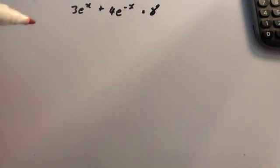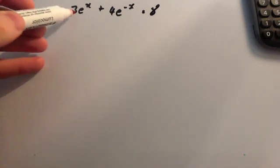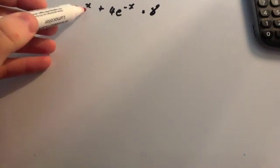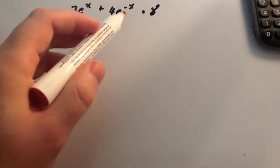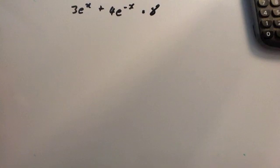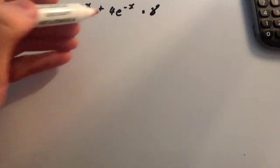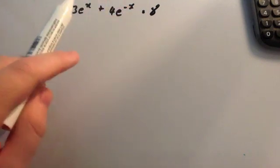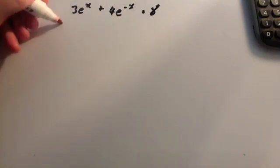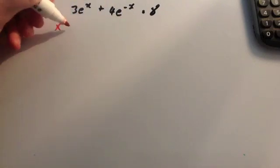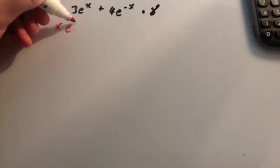The second thing I notice is there are three consecutive powers: e to the x, e to the 0x, and e to the minus x — decreasing powers of x. What would be nice is if I could get rid of this e to the minus x, so I'm going to multiply through by e to the x.